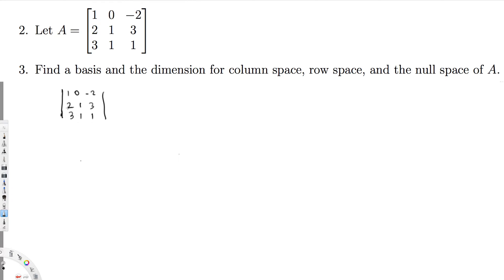To eliminate the entry below the first pivot, I multiply the first row by -2 and add it to the second row: -2R1 + R2. This gives us 0 in the first position, then 1, then (-2)(−2) + 3 = positive 4 + 3 = 7. So the second row becomes: 0, 1, 7.